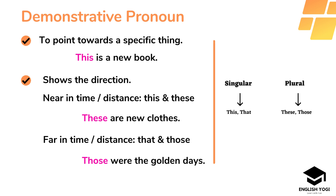The next type of pronoun is the demonstrative pronoun. The word 'demonstrative' itself is meaningful to understand this type. A demonstrative pronoun is used to talk about a specific thing or person. Demonstrative pronouns point to the object they are replacing and can stand alone and function as a noun. The main points to remember are that demonstrative pronouns are used to show direction, time and distance. 'This' and 'that' are singular, while 'these' and 'those' are plural.